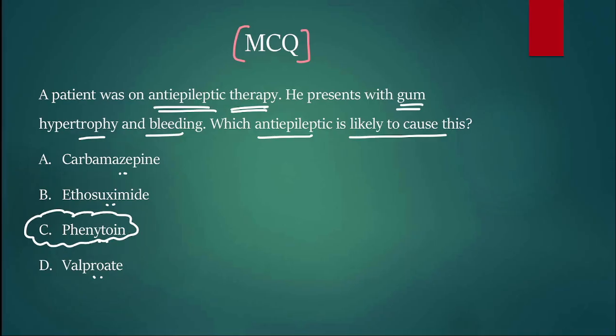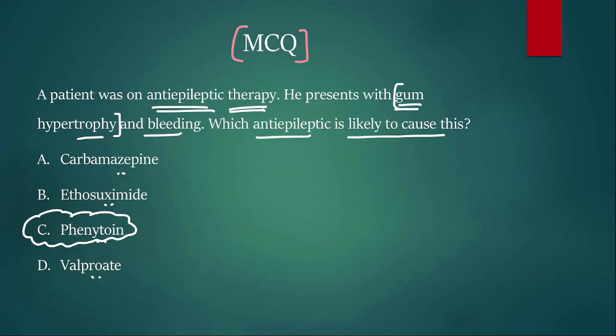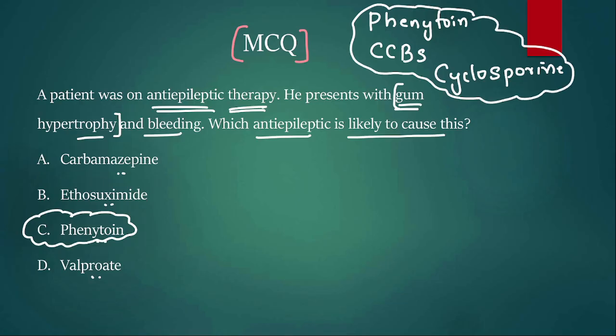Please understand the catch point here is gum hypertrophy or hyperplasia. Three major drugs which do this are an antiepileptic called phenytoin, calcium channel blockers which are used in hypertension, and cyclosporine which is an immunosuppressant. These three drugs are commonly tested for gum hyperplasia. Since they have given antiepileptic therapy, the answer will be phenytoin. But let us understand the adverse effects of the drugs given in the options.